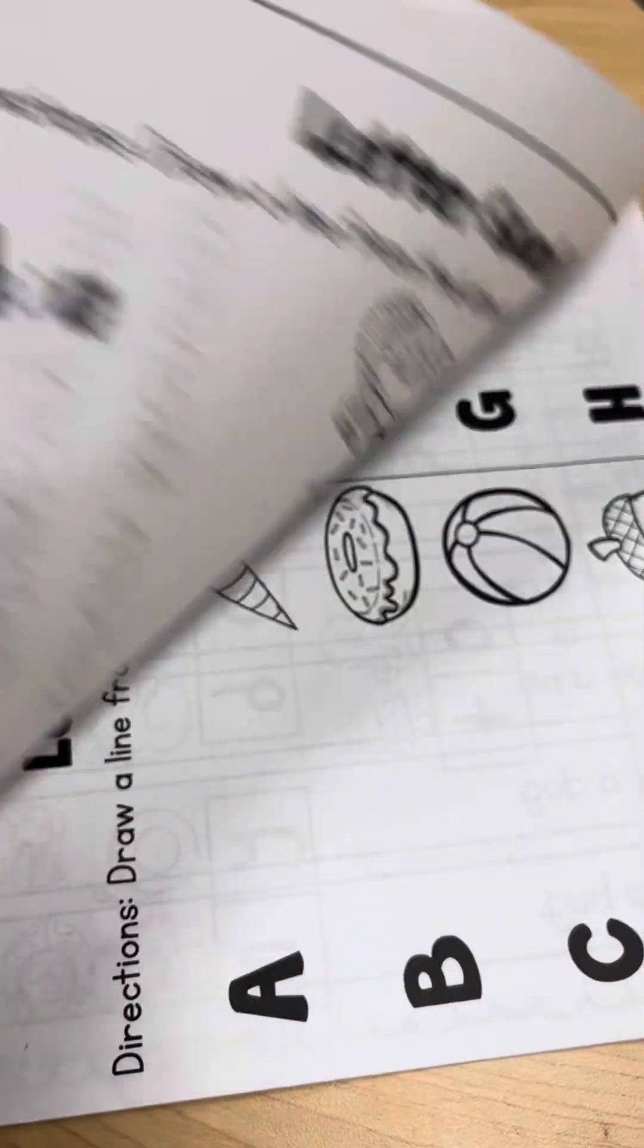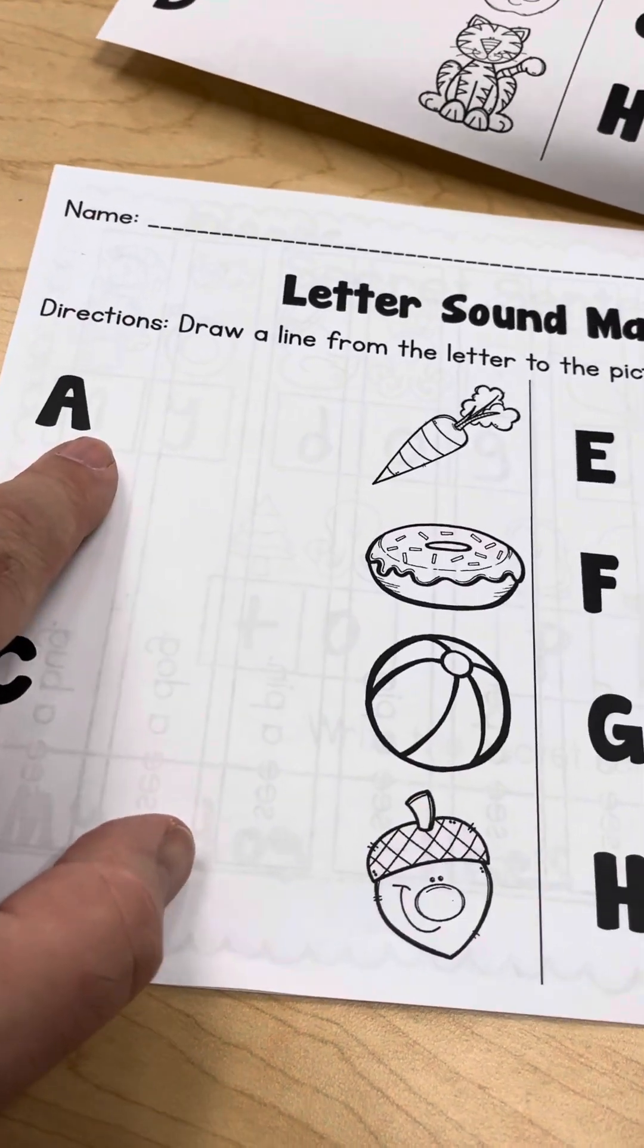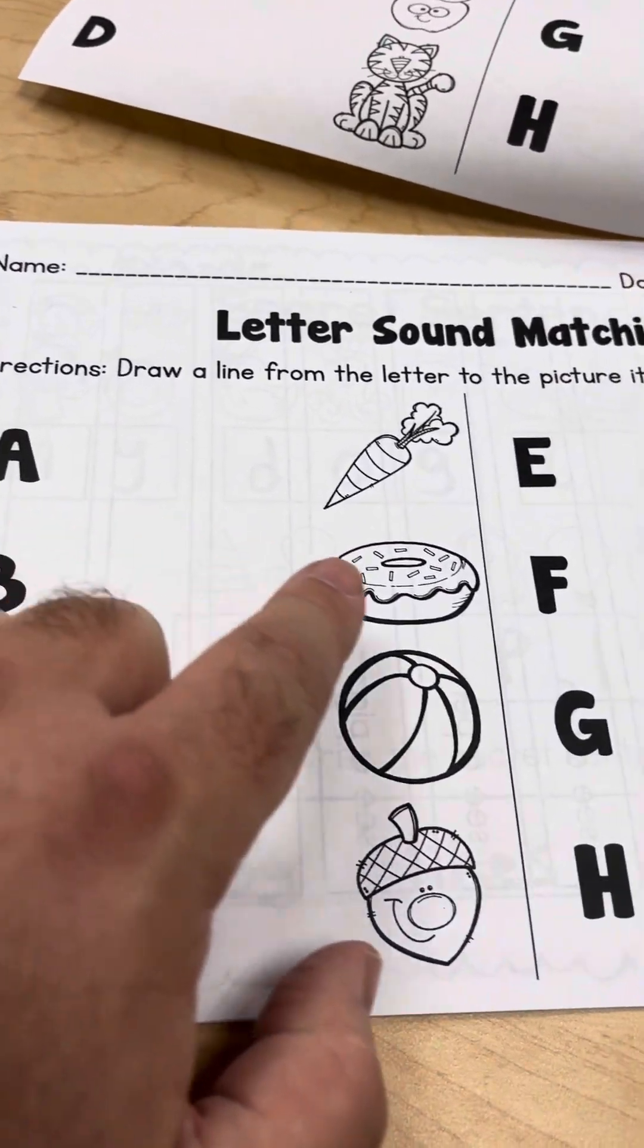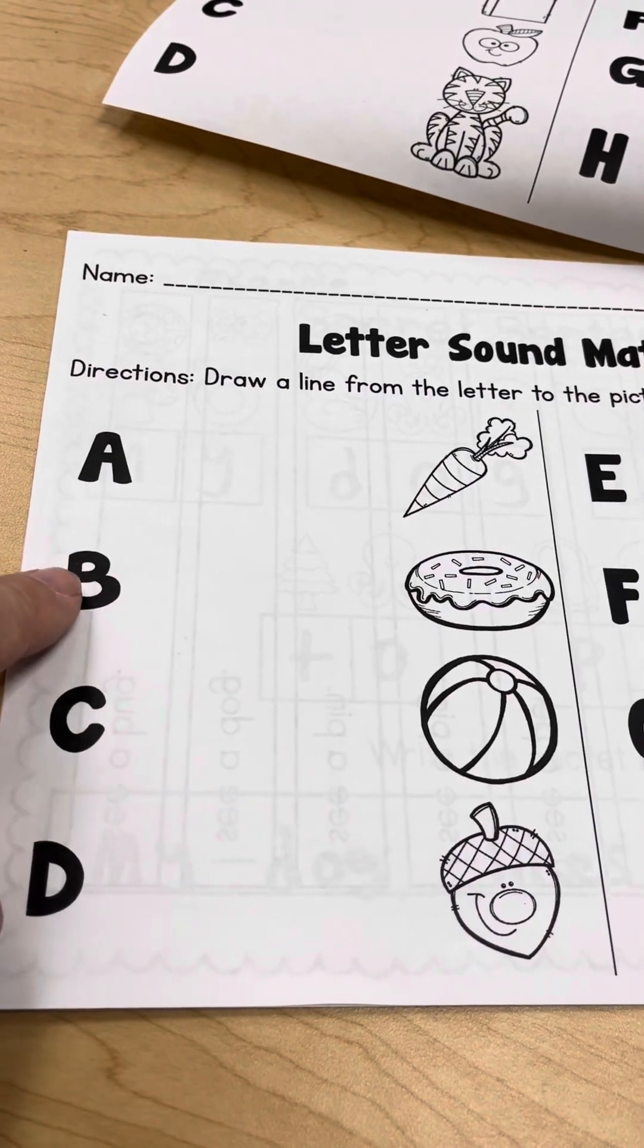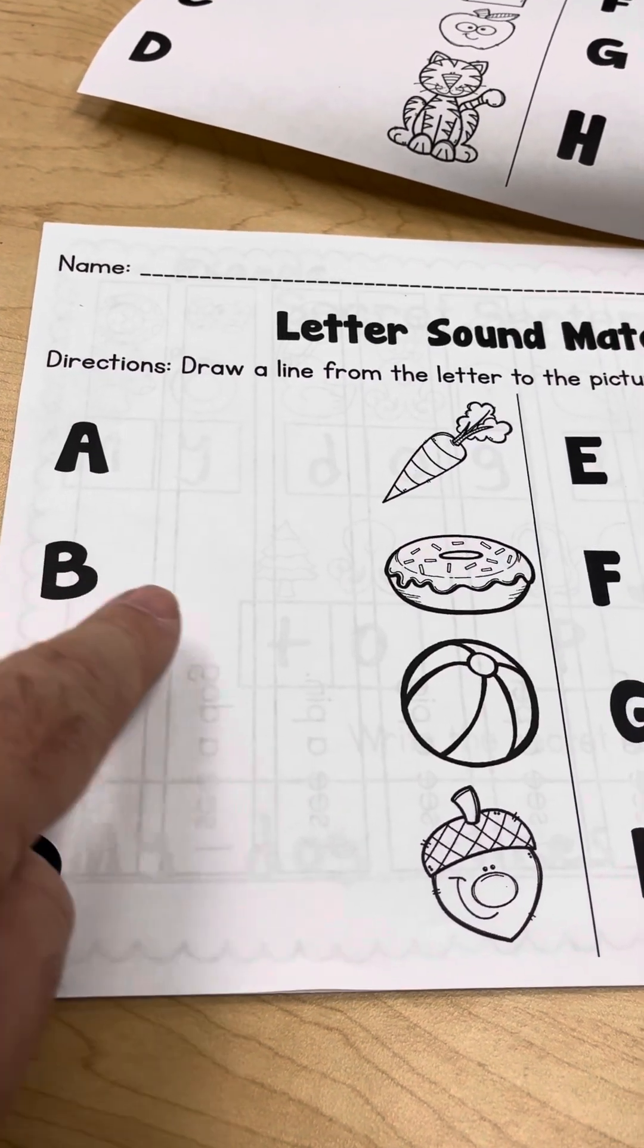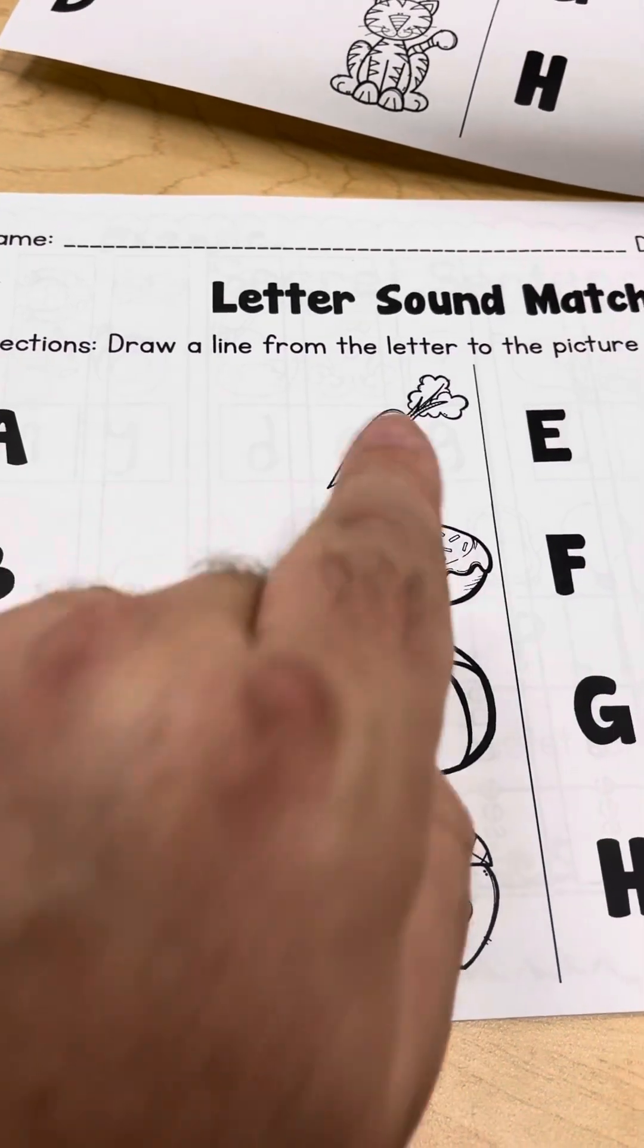Kindergarten students have a little more elaborate homework. They're going to draw a line from the letter to the object that starts with that letter. For instance, B, ball, C, carrot.